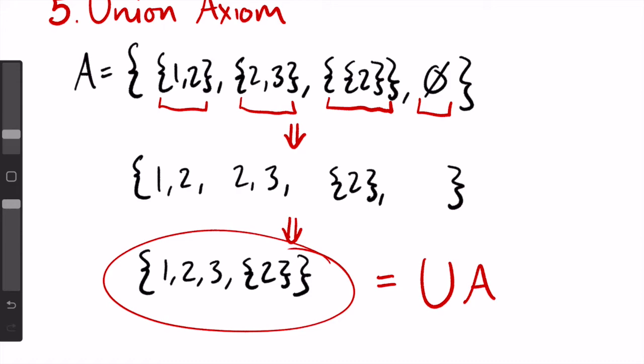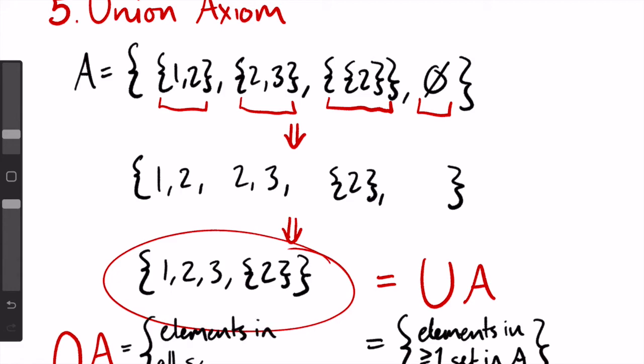There are plenty of problems dealing with union a in the example problems linked in the description, so be sure to go check those out. Another way to think about union a is union a equals the set of all elements that belong to at least one set in a. Similarly, we can think about intersection a as a set of all elements that belong to every set in a, and you'll see that we use these ways of thinking about it a lot when we do proofs in the example problems.